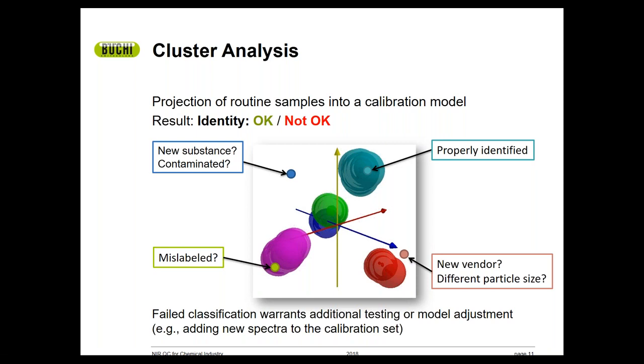If the sample spectra falls just outside of the cluster, as shown with the red dot relative to the red cluster, it may be likely that something is different about that sample. Whether it's something to do with particle size or composition, that would need examined further. If the sample spectra falls into the wrong cluster, as shown with the green dot falling into the magenta cluster, the sample has been mislabeled and the NIR software will, in this case, indicate the true identity of the sample.